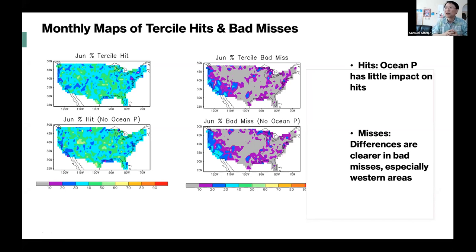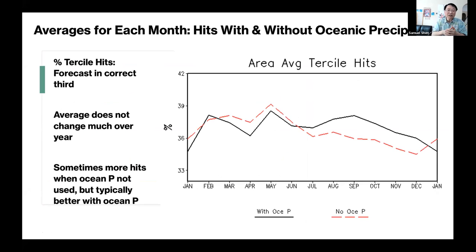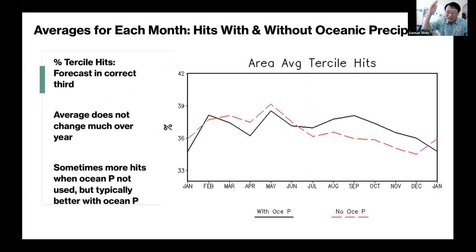That is our main conclusion — or perhaps a hint rather than a definitive conclusion. Averaging over hits and misses, we get about a 30 to 40% hit rate, which is not as high as we'd like.